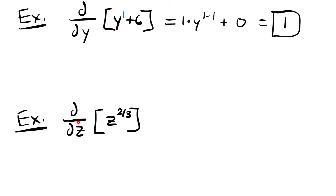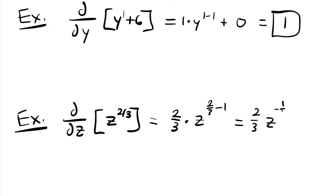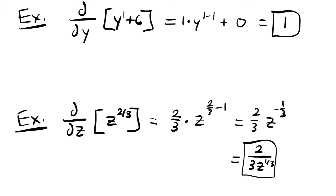Now let's look at the derivative with respect to z of z to the 2/3 power. Using the power rule, this equals 2/3 times z to the 2/3 minus 1 power. Since 2/3 minus 1 equals negative 1/3, we get 2/3 times z to the negative 1/3. Moving the negative exponent to the denominator gives us 2 over 3 times z to the 1/3 power, which could also be written as 2 over 3 times the cubed root of z.